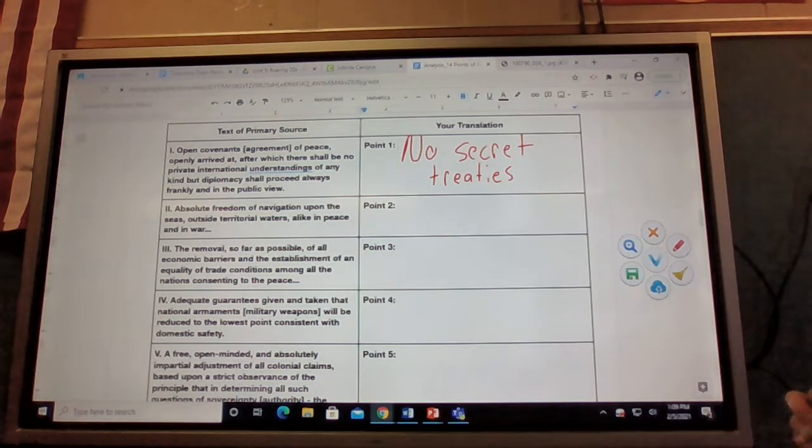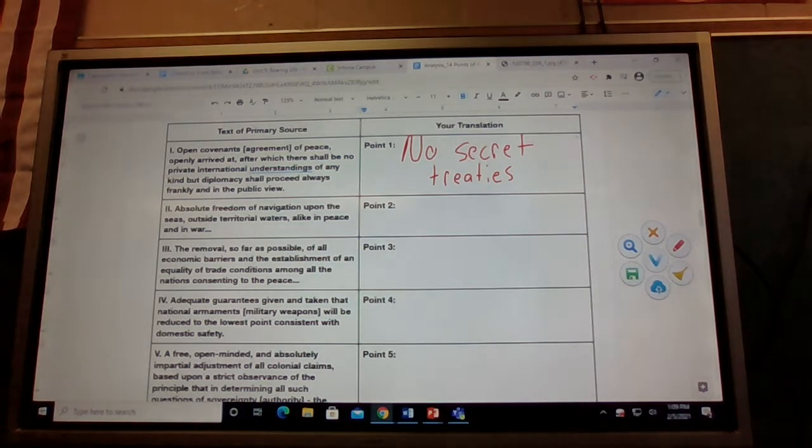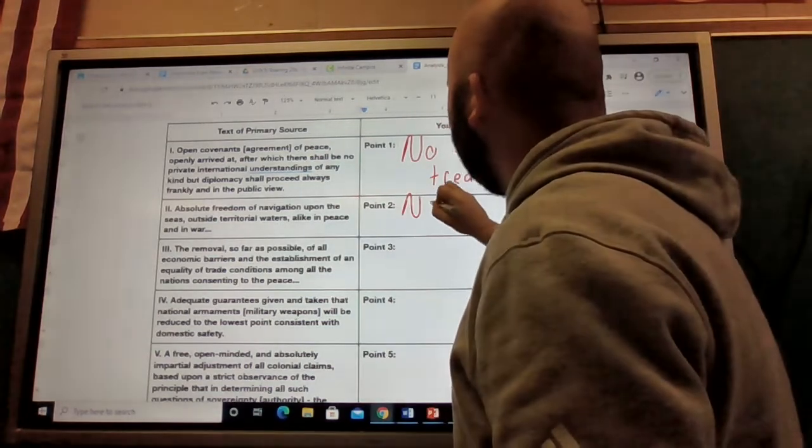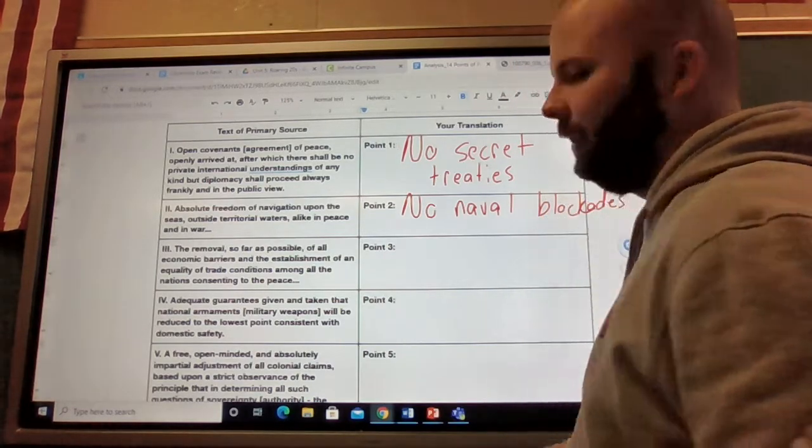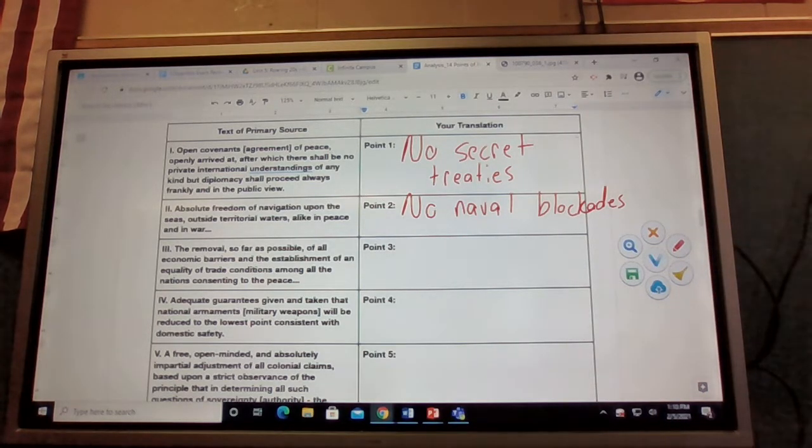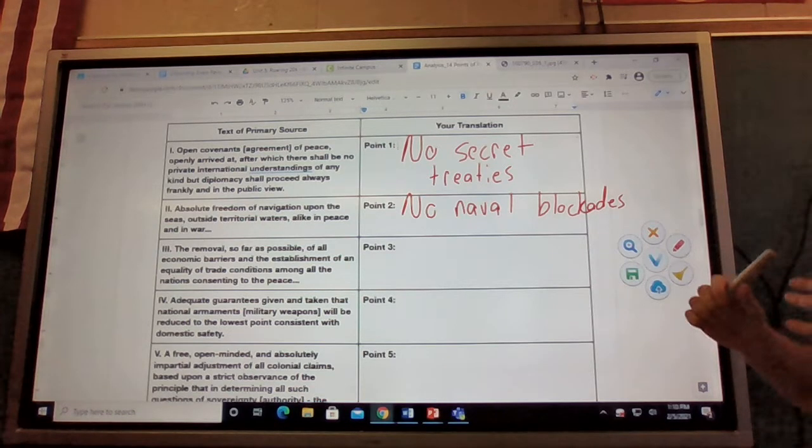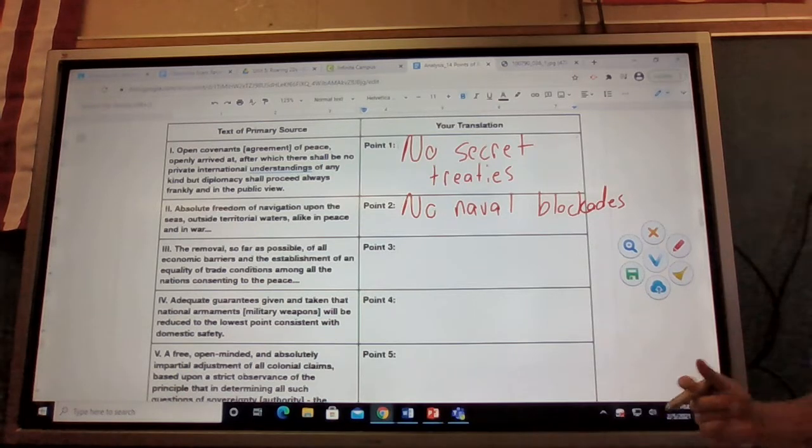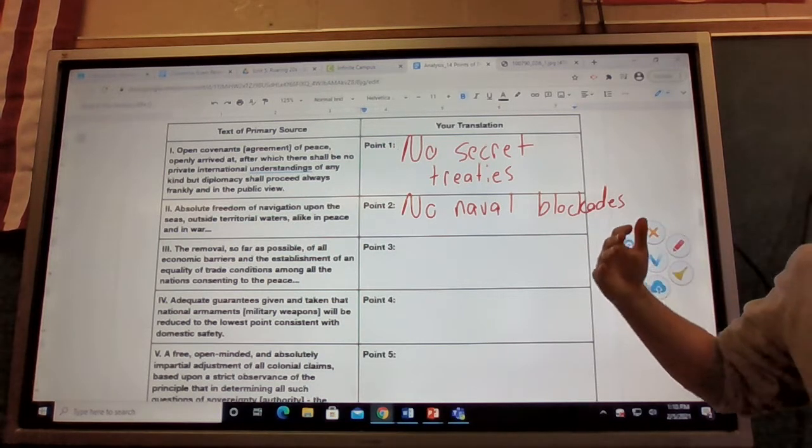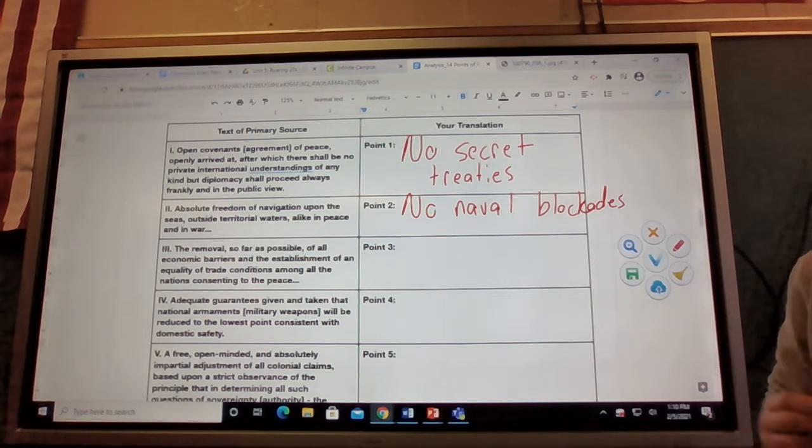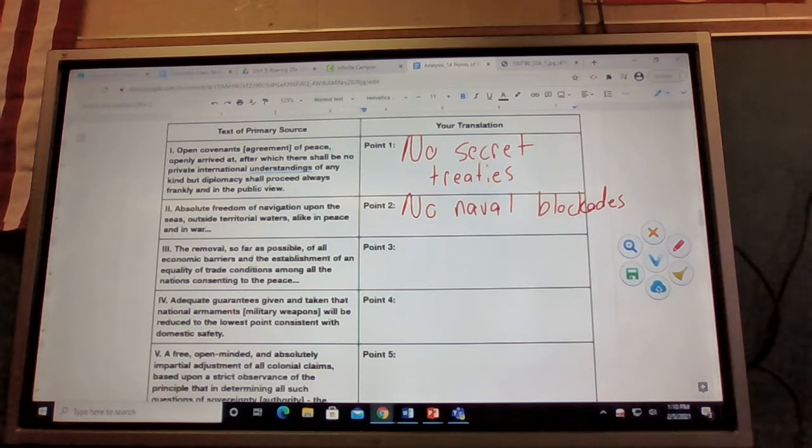Number two: absolute freedom of navigation upon the seas, outside territorial waters alike, in peace and in war. This means no naval blockades of any kind. This is a big part of the reason why the U.S. gets involved in World War I because of unrestricted U-boat warfare in 1917. Germany was basically installing a blockade on American shipping. Wilson says if we get rid of the naval blockades, this can help ensure a lasting peace.